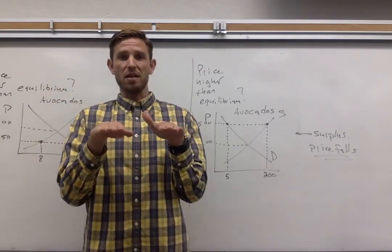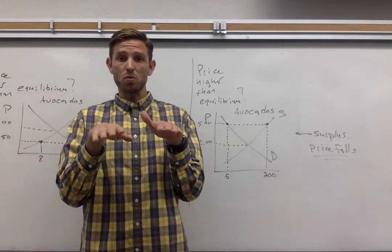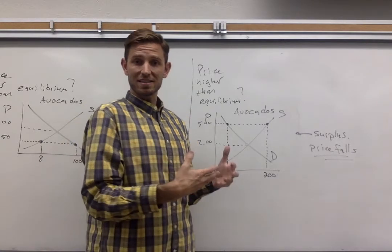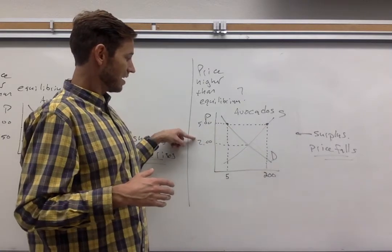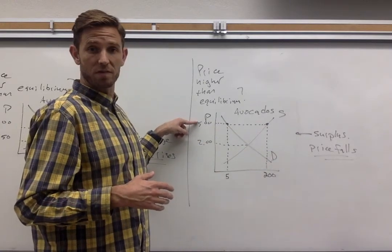And so once again, we're not in balance. Quantity supplied does not equal quantity demanded. In this case, the language that you want is that there's a surplus. That's going to happen whenever the price is up in this range of the graph, up above the equilibrium.